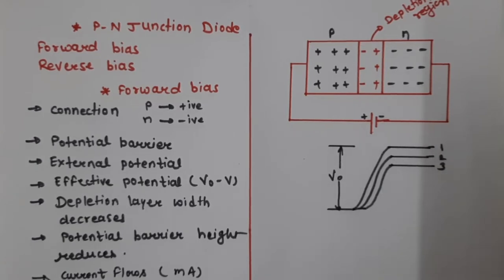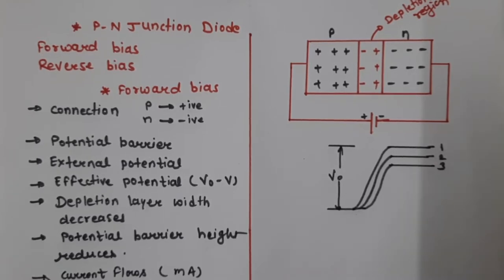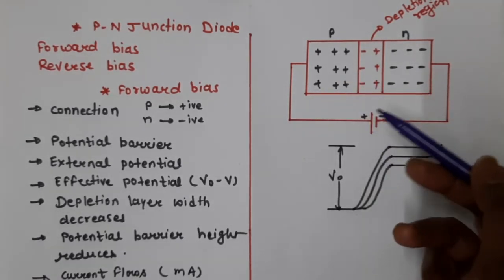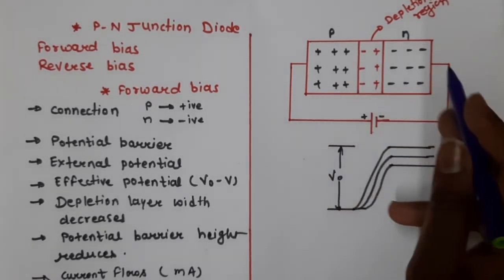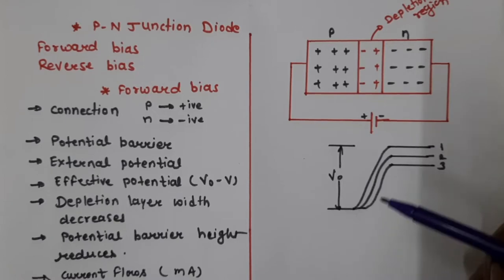Now we will study forward biasing. Biasing is the process in which the PN junction diode is connected to an external battery. When we connect the PN junction diode to the external battery, this process is called biasing. Biasing is of two types: forward biasing and reverse biasing.